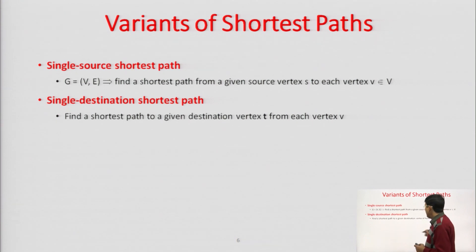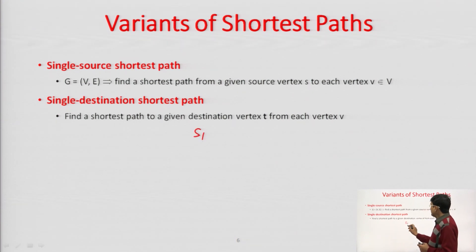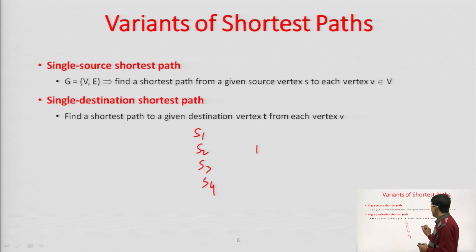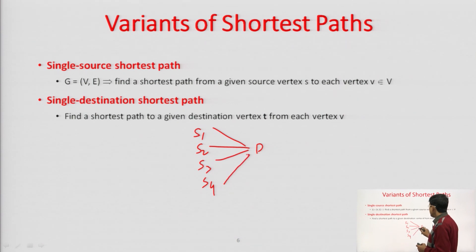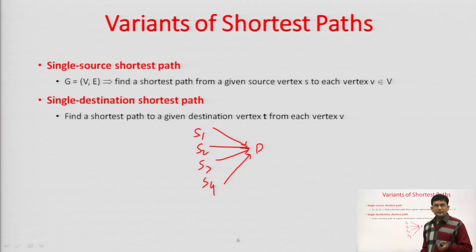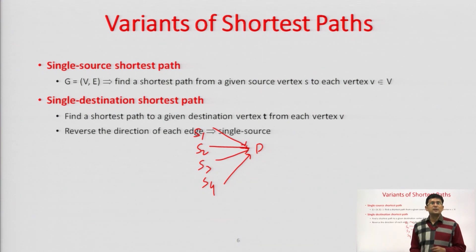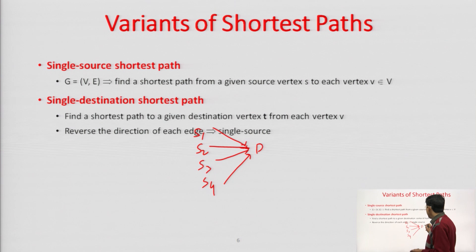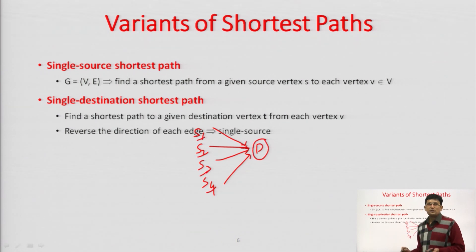The college should find out the shortest path from the college to other cities. The source is specified — the source is my college — and there are many destinations. For all those destinations, we need to find out the shortest path. That is the single source shortest path. For single destination shortest path, there are various sources but the destination is common. To find the solution, you need to reverse the edges of the graph and then find out the single source shortest path — D becomes the source and S1, S2, S3, S4 become the destinations.